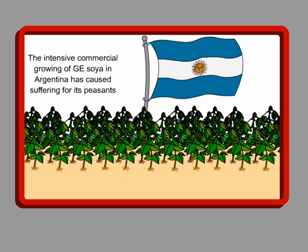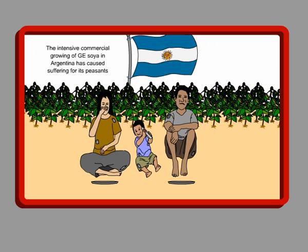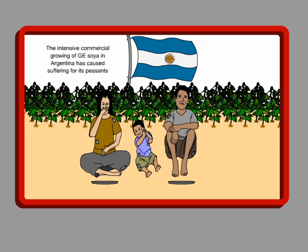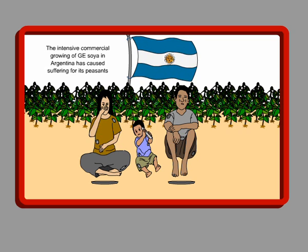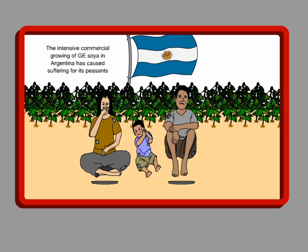In Argentina, thousands of peasants and children are suffering from poverty and malnutrition because of the intensive commercial growing of GE soya. They have lost their local food like vegetables, which they depended on for a healthy diet. Now they are forced to eat GE soya — which is harmful, not their cultural food, and widely used for animal feed in other countries.